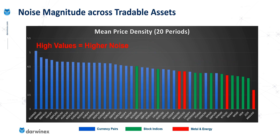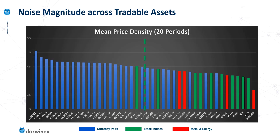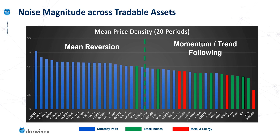The opposite is true of higher noise assets — based on the hypothesis, these are going to be more suited to mean reversion-type strategies. So how do we start to look at the impact on actual performance? Well, we could draw a line right down the middle and do a direct comparison between how well a trend-following strategy performed using just the assets on the right-hand side, compared to how it performs with the assets on the left-hand side with higher noise. If the theory is correct, we should see much better performance from the right-hand-side assets, and the opposite for mean reversion systems.